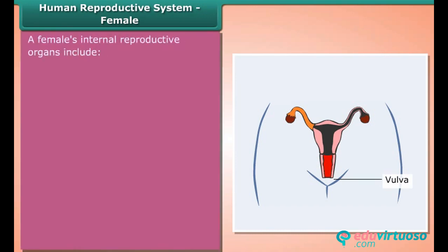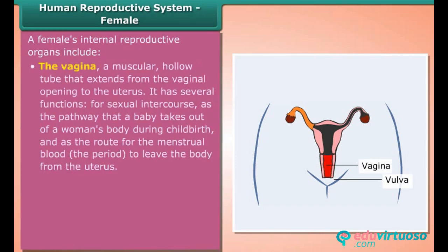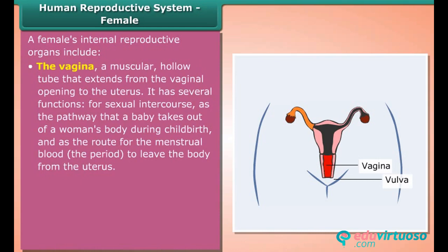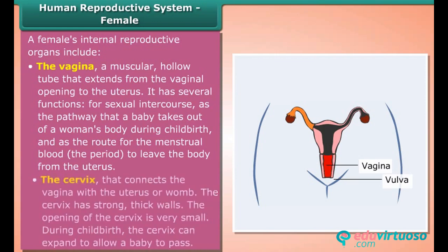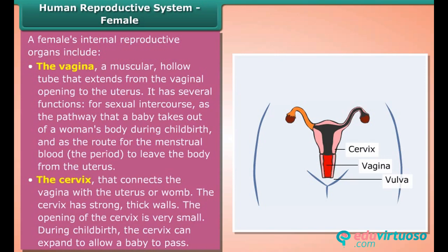A female's internal reproductive organs include the vagina, a muscular hollow tube that extends from the vaginal opening to the uterus. It serves several functions: for sexual intercourse, as the pathway that a baby takes out of a woman's body during childbirth, and as the route for menstrual blood to leave the body. The cervix connects the vagina with the uterus or womb and has strong thick walls.